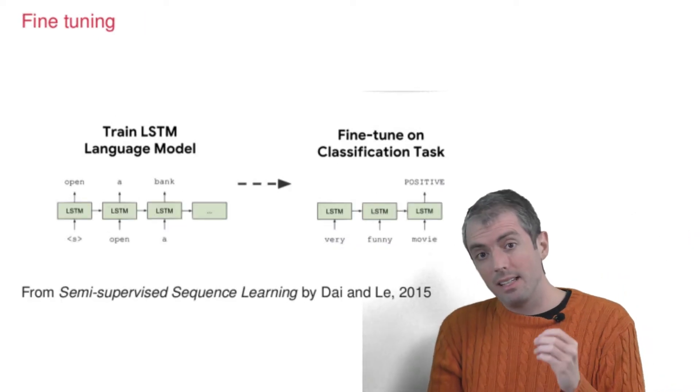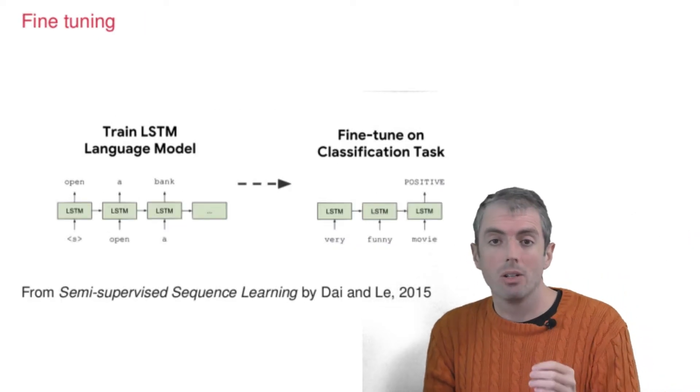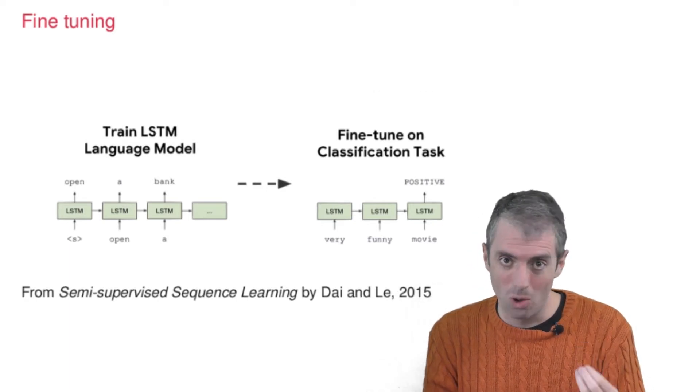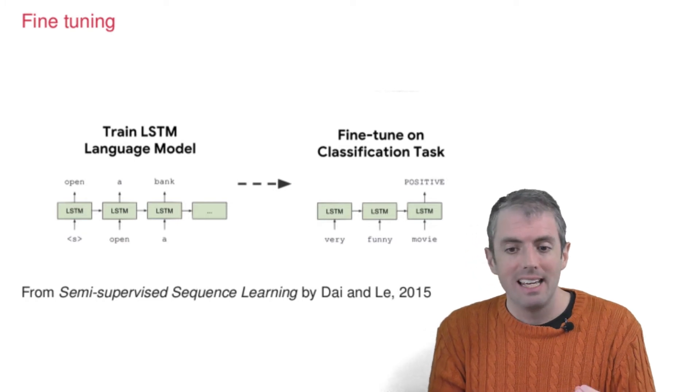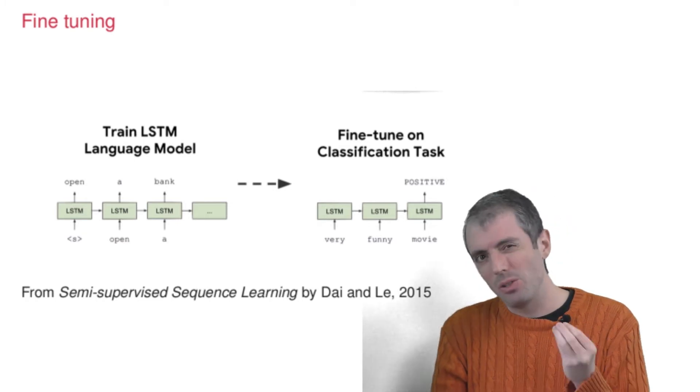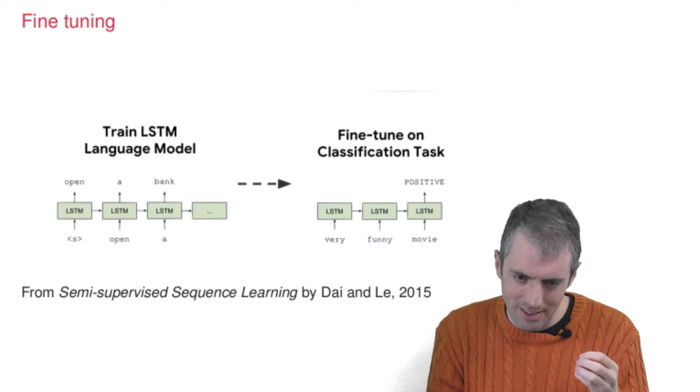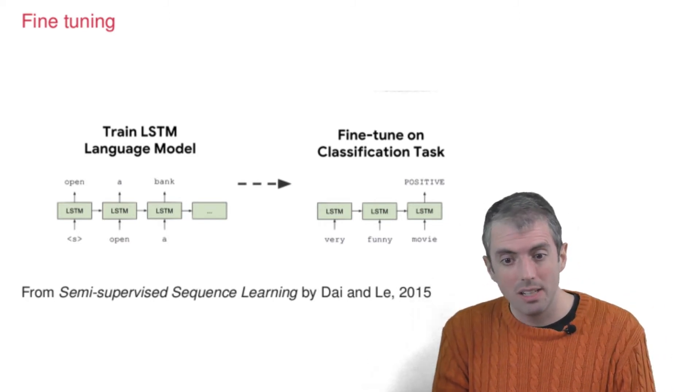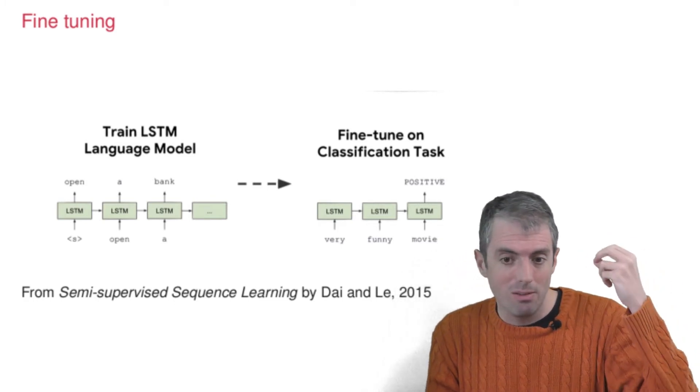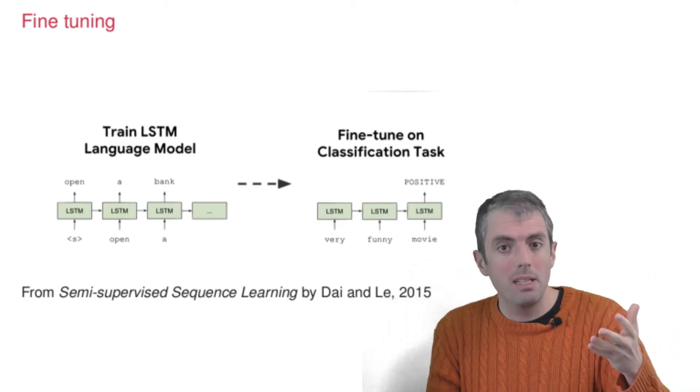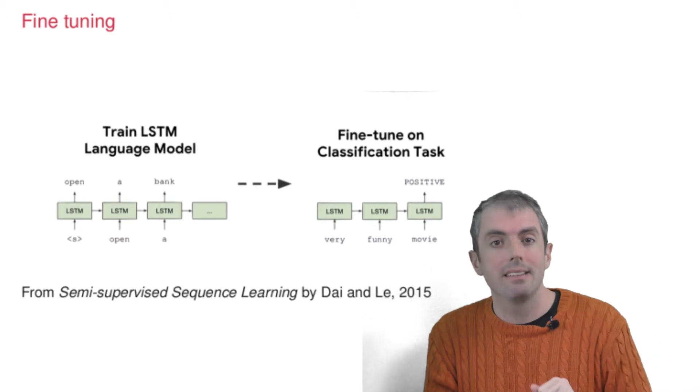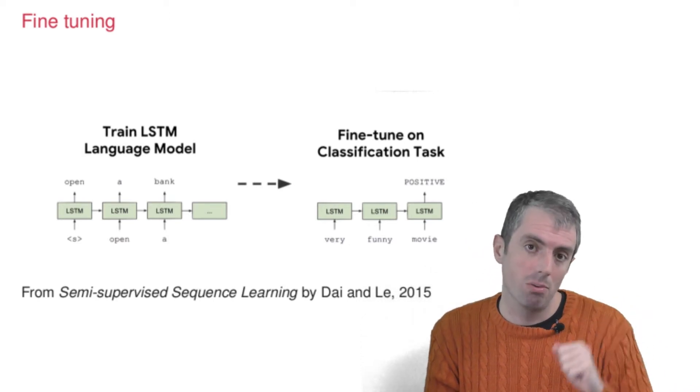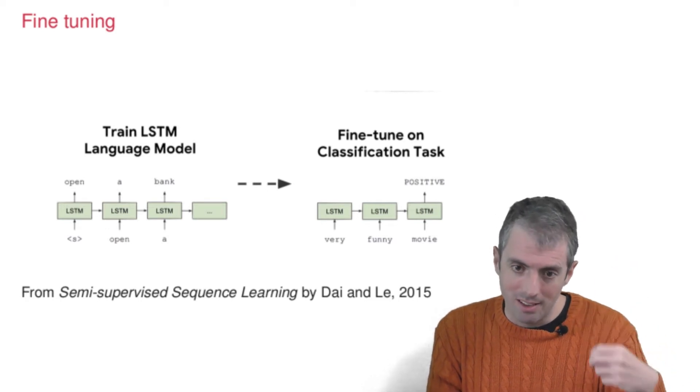One of the reasons that these neural language models have taken on such a big role in natural language processing is that you can do fine-tuning on these models. So you train a language model. And this could be a language model as simple as an LSTM, where you take the hidden layer of LSTM and try to predict the next word. So given the start of the sentence, predict 'open.' Given 'open,' try to predict 'a.' Given 'a,' try to predict 'bank.'